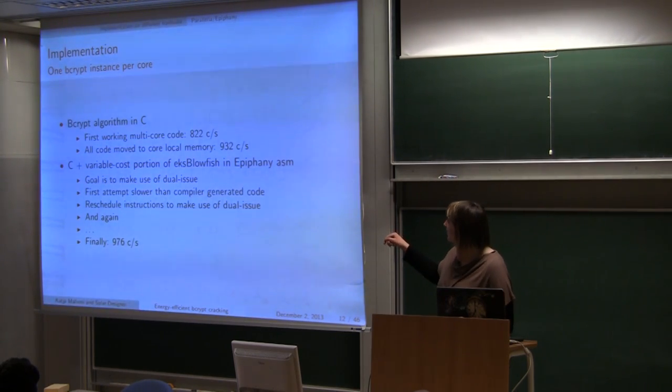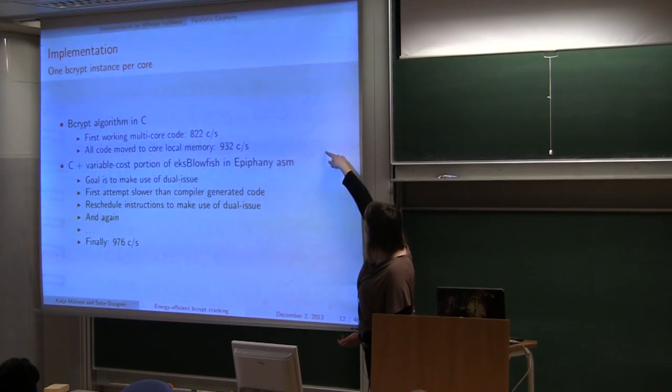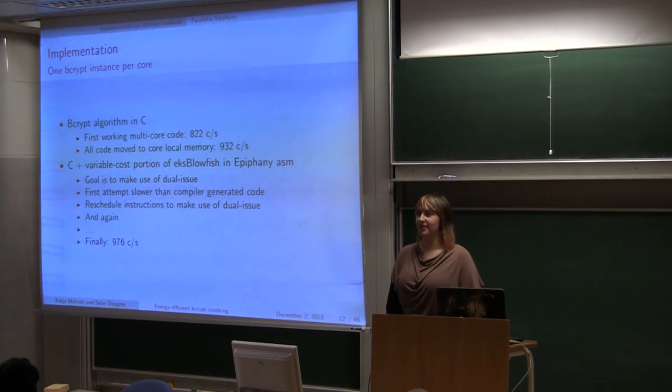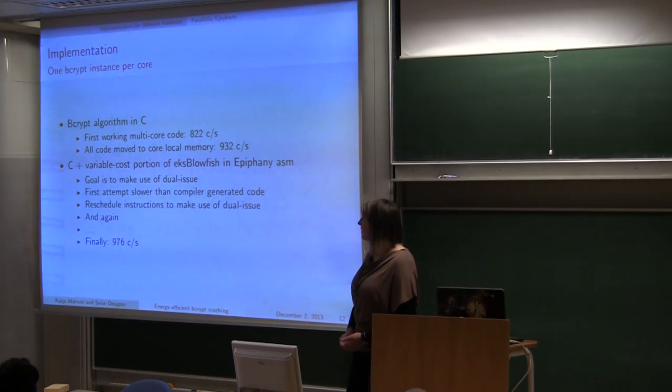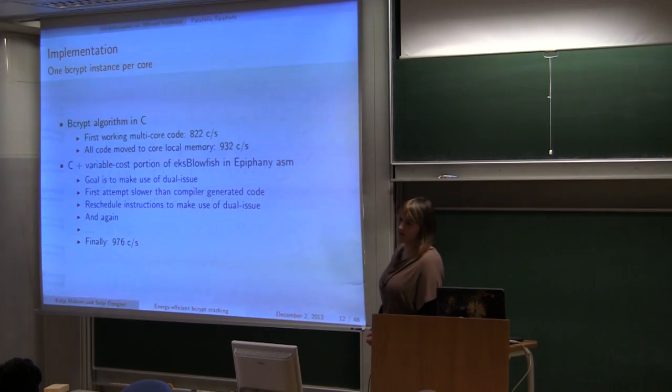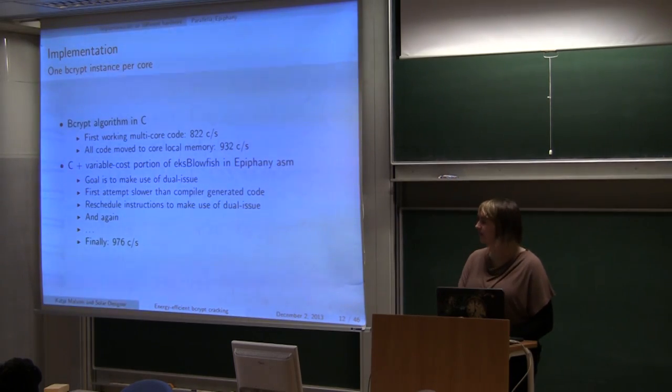And next few attempts as well. So I just decided to write it on paper. You can do manual count cycles, mark when it's fine, when there are no latencies and stuff. So after a lot of trials and errors, finally dual issue was used successfully, which gave performance of 976 cycles, cracks per second.